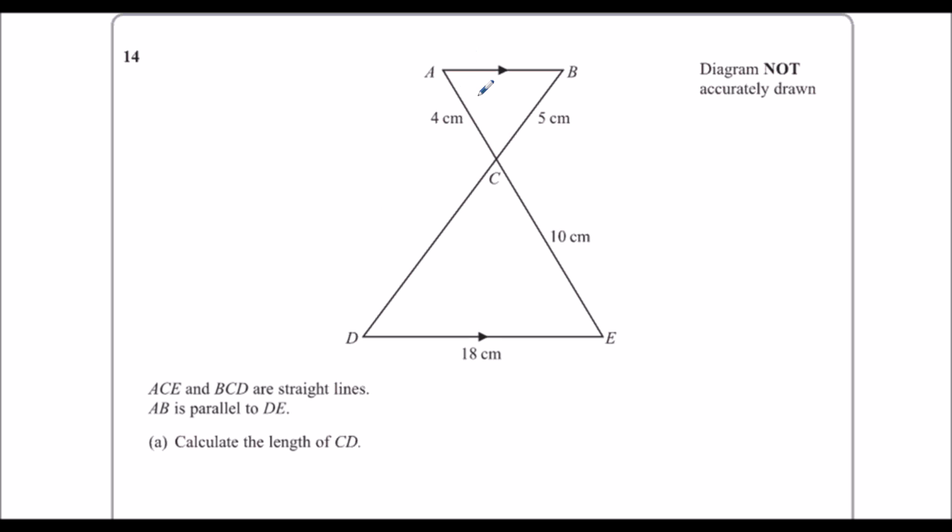And we know they're similar because this angle here is the same as this angle here. They're vertically opposite angles. This one here is the same as this one here because they're alternate, and so are these ones. So we've got a similar shape.